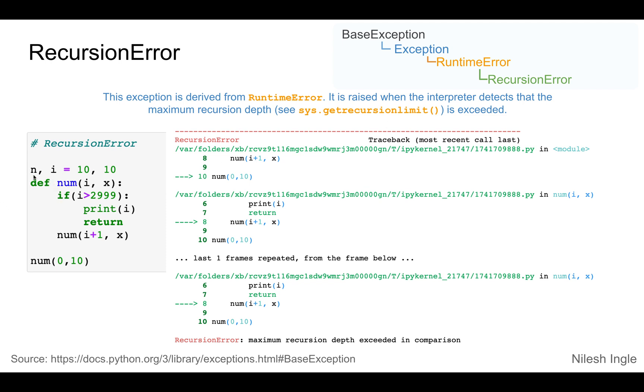In the example, we have declared variables n and i to 10. Then we have this function num which takes n, i, and x as input arguments. We check the condition if i is greater than 2999, then we print i and return. After the if block, we are incrementing the value of i by one.